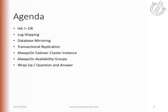Here is today's agenda. First, we'll briefly talk about what is HA, what is disaster recovery, and why they don't equal each other. From there, we'll take a high-level look at all the features inside SQL Server to help with high availability: log shipping, database mirroring, a quick dive into transactional replication, then failover clusters and availability groups, and then wrap up with questions.